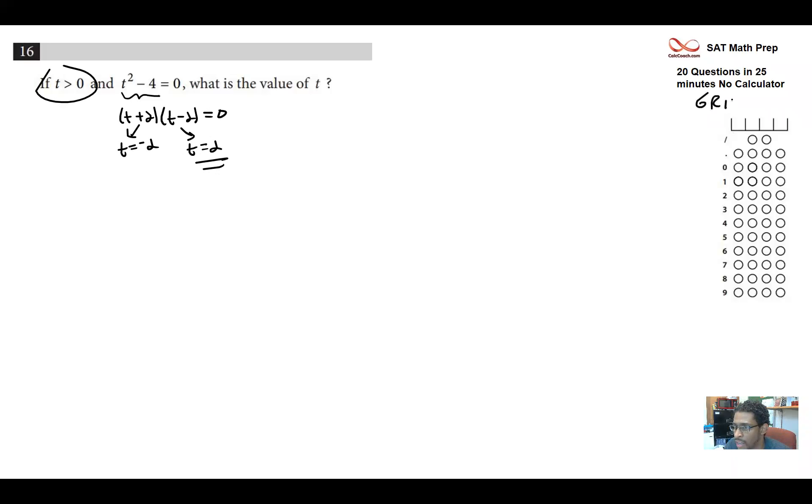This is a grid question, and in grid questions, you want to not only bubble but also put the number up top. That involved algebra and solving an equation with variables.